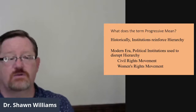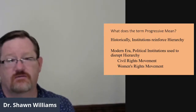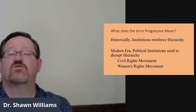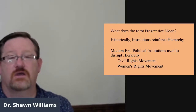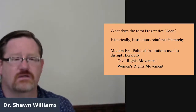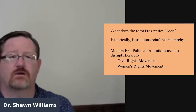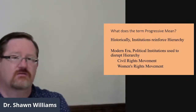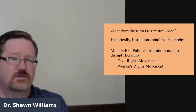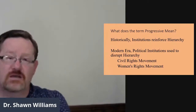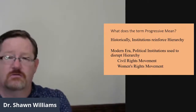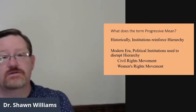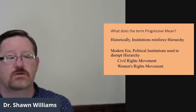Examples of this would be the civil rights movement in the 1940s, 50s, and 60s, and also the women's rights movement at the turn of the 20th century, and then again more recently as well. In both of these situations, we think of these people as being progressives in the sense that they want to make change — to take down or tear down hierarchy — but they want to use political institutions to do it. This is a relatively recent, contemporary concept.